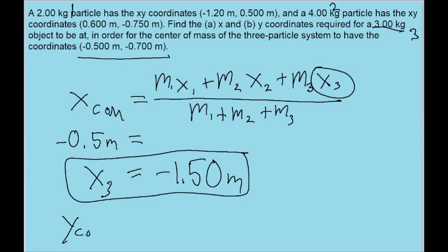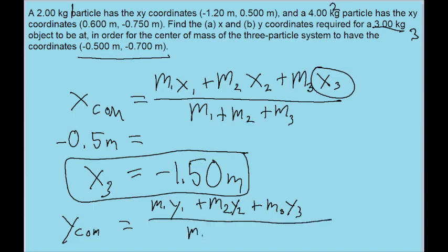For part b, for the y coordinate, we'll just do pretty much the exact same thing, except we'll have to use the y version of the formula. So instead, it's the mass of particle one times the y position of that particle, plus m2y2, plus m3y3, all over, again, the total mass of the system.